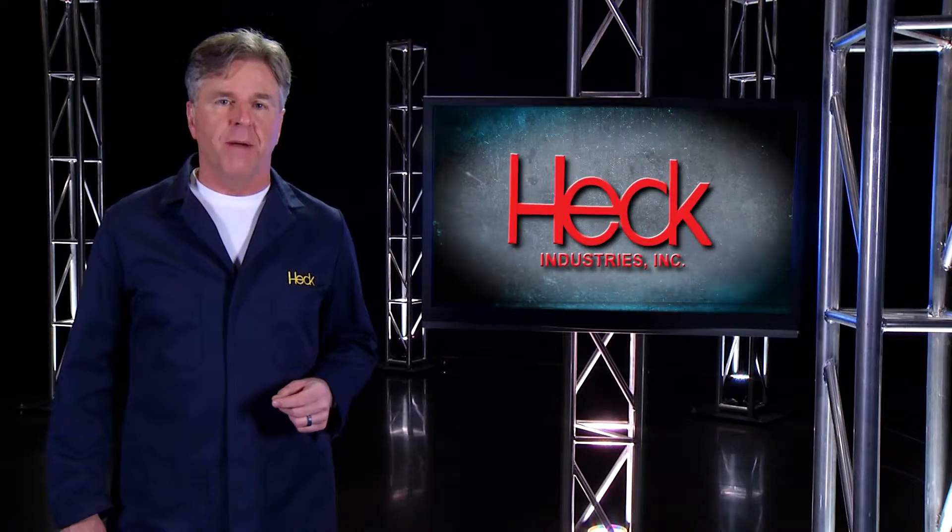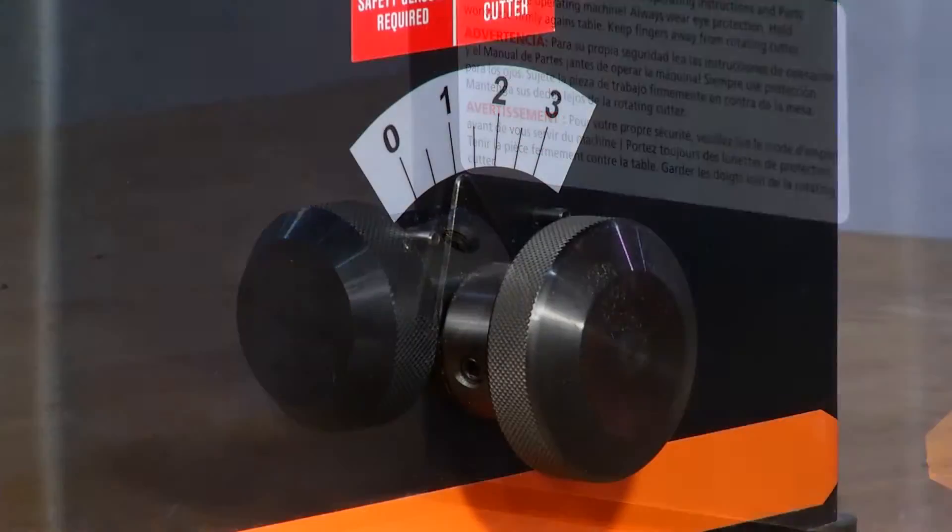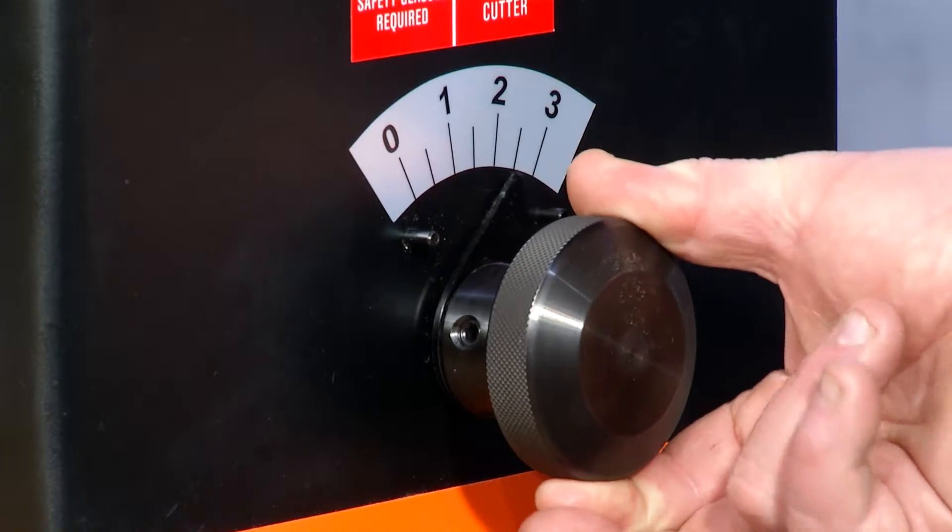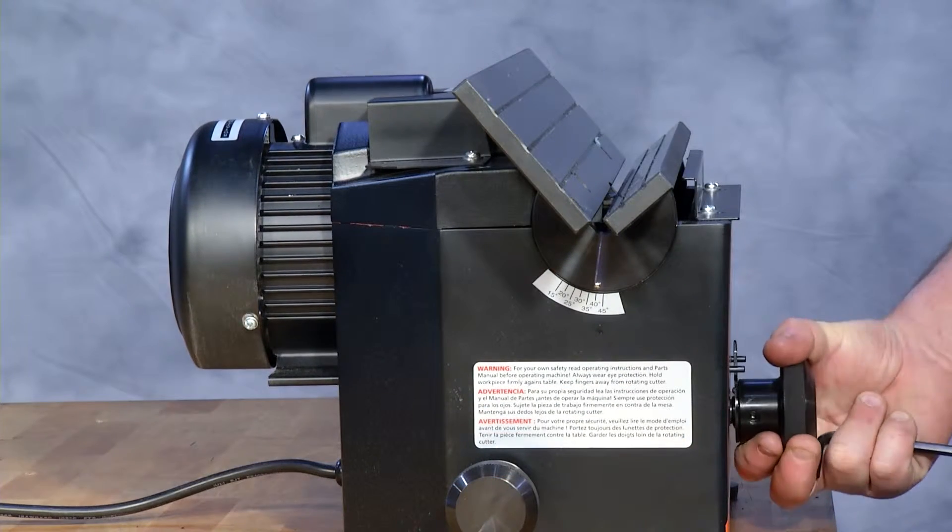Setting up to make our chamfers is actually quite easy. First we'll release the lock on the side of the tool and then turn the dial on the front to between 1 and 3. Each number represents about a 1/16 inch cut.